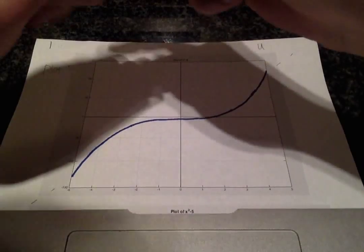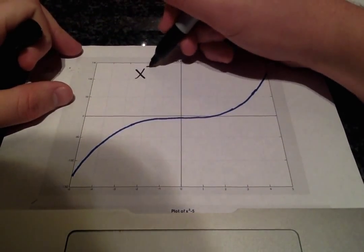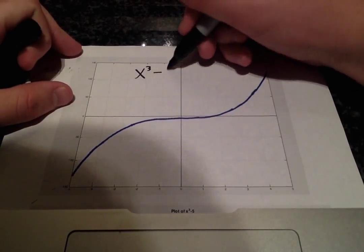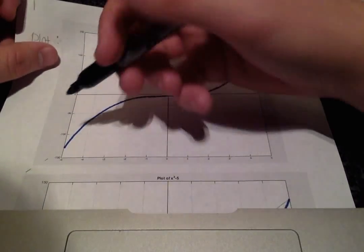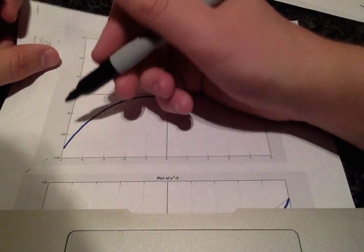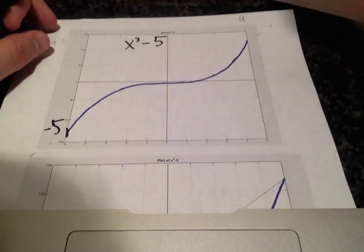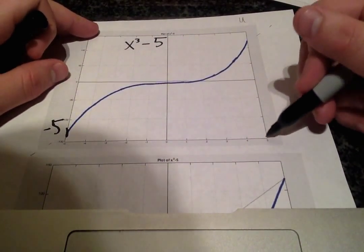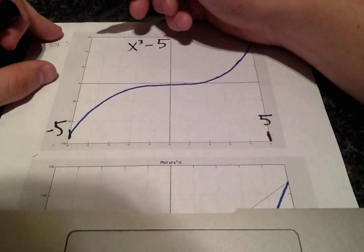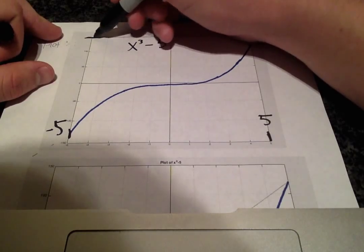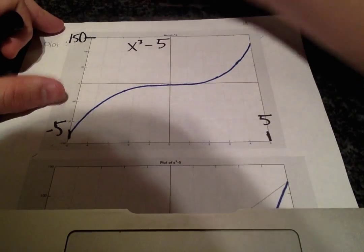Alright, so here we have a plot of x cubed minus 5 where the data is not exactly equally spaced. Here this point is negative 5 and this point is 5, and up here we have our y axis going up to 150.